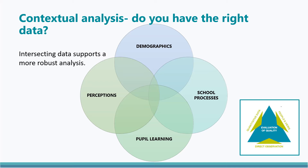Perception data helps us understand what staff, pupils, parents and partners think about the school and its work, and can also provide insight into the impact of poverty and the barriers faced by pupils and their families. School processes refers to the inputs that impact learning and includes pedagogical approaches, the delivery of learning, teaching and assessment, and tracking and monitoring processes. Pupil learning is the outputs — the impact for pupils — and includes information on attendance, exclusion, engagement, wellbeing, attainment, participation and achievement.